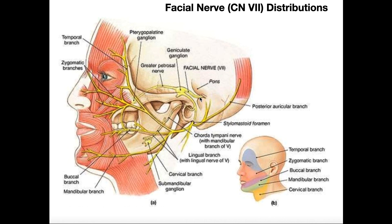Here's the facial nerve originating from the pons. While it's still within the cranium, it forms this enlargement called the geniculate ganglion. The geniculate ganglion has several branches. One of them that still remains in the skull, at least initially, is the greater petrosal nerve.